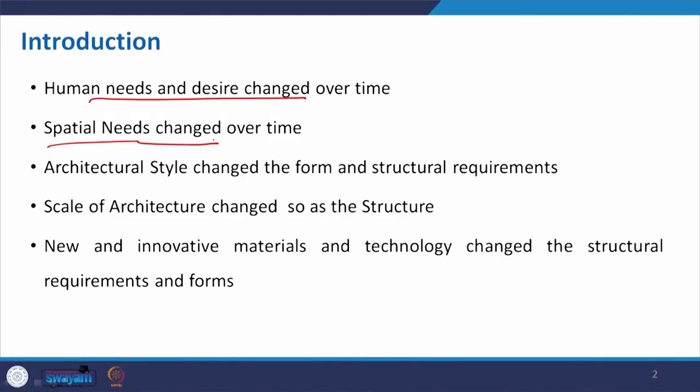Over time, the spatial need also changed. From the cave with its different space requirements, modifications have been done over the years. We segregate space in different manners — in a residential building we have bedrooms, toilets, kitchen, and dining. The requirement of each space is based on anthropometry, which is the dimension required to do our activity. Anthropometry played a crucial role in designing those spaces. Spatial arrangement and requirements changed over time, and we have seen monumental structures in history become human-scale structures.